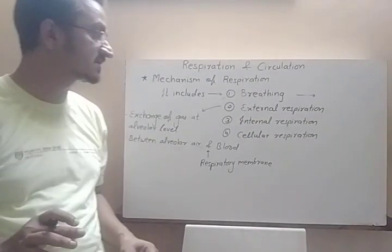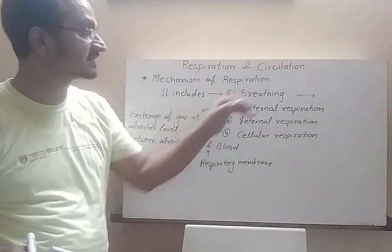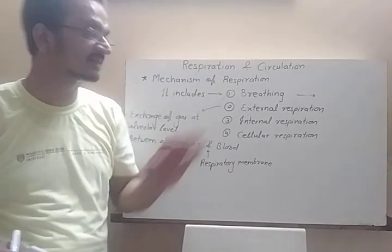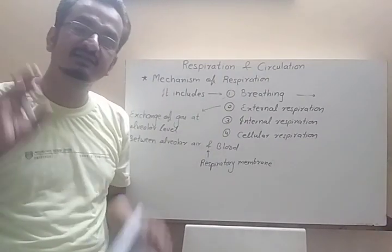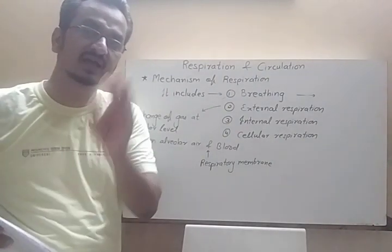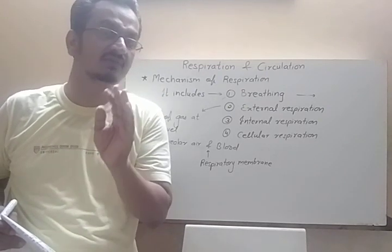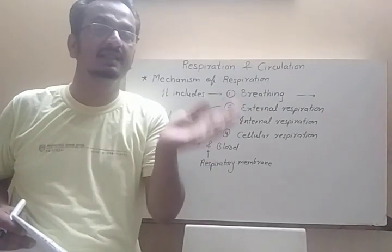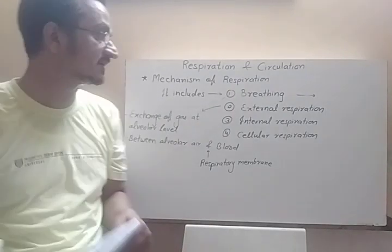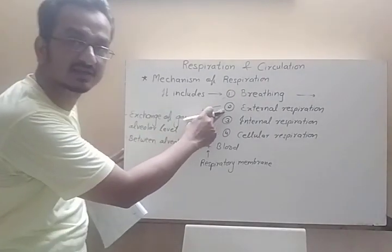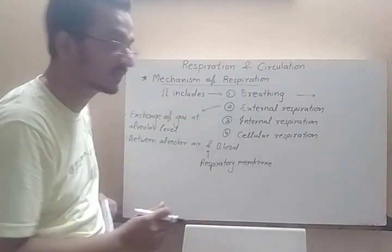In the mechanism of respiration, the second step is external respiration. The first step — breathing — we have already completed. Now, what is external respiration? As said earlier, it is the exchange of gas between the alveoli and the blood present around the alveoli. This is called external respiration, and it is the second step in the mechanism of respiration.